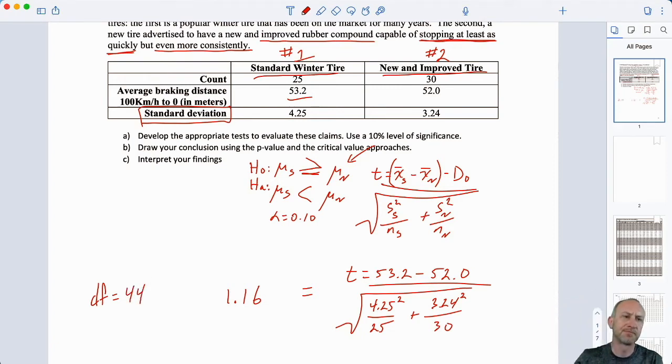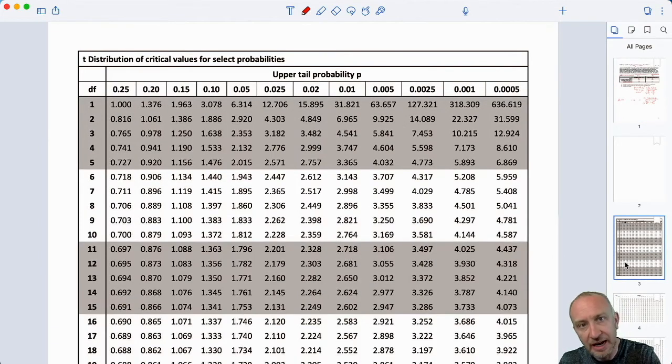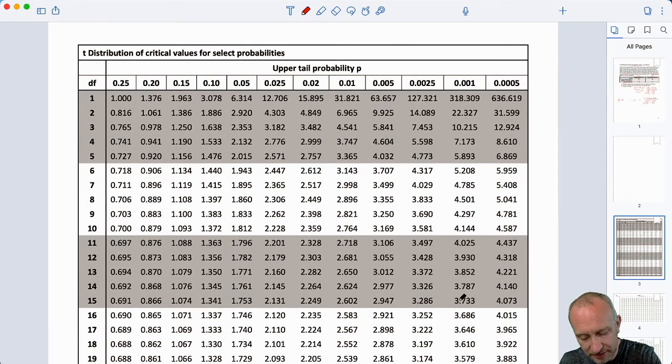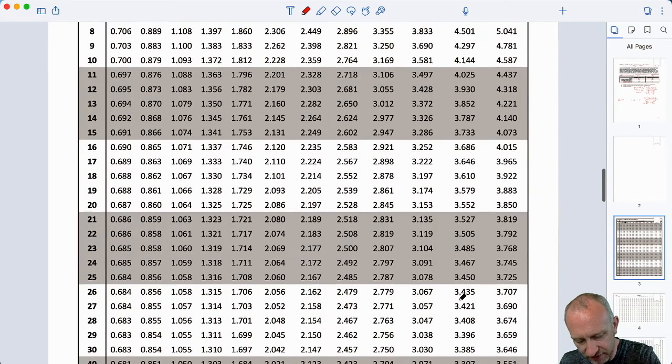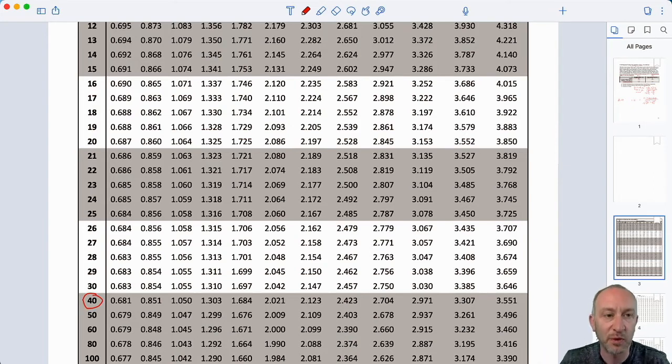Now, we're never very precise when we're using our distribution tables anyways. If I go down to my t tables, and I am looking for a distribution with 44 degrees of freedom, well, I'm not going to find it anyways. The best I can do is 40 degrees of freedom. So, we're never very precise here.